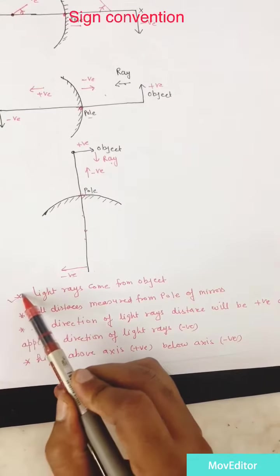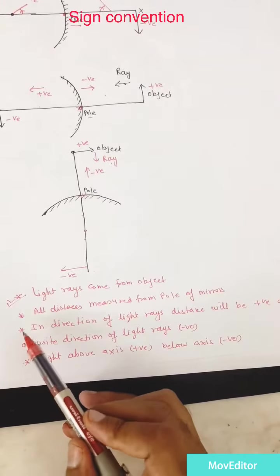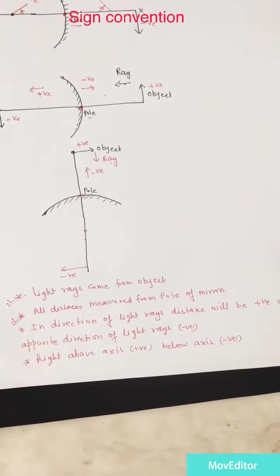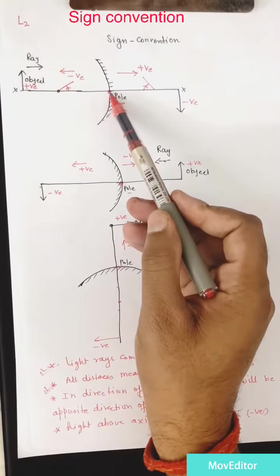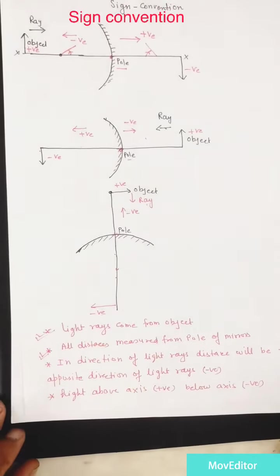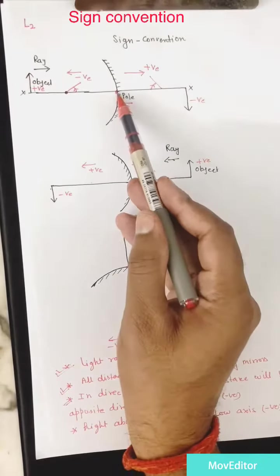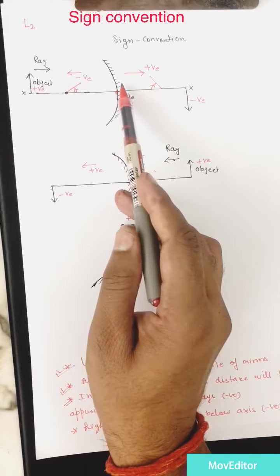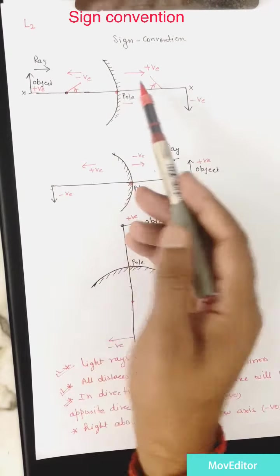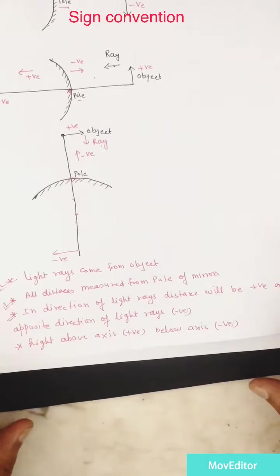Final conclusion: First point — light ray always comes from the object. Second point — all distances are measured from the pole of the mirror. Third point — while measuring any distance, if you are moving in the direction of the light ray, that distance will be positive; if moving in the opposite direction, it will be negative. Height above the principal axis is positive; height below the principal axis is negative. Clockwise angle is positive and anticlockwise angle is negative.